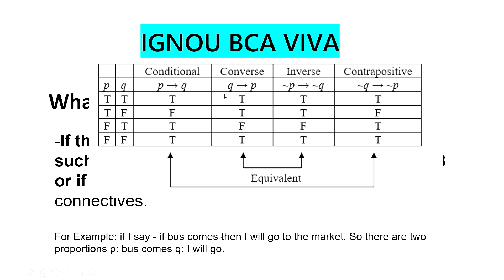Converse is 'if Q then P'. If both are false, the minus-minus becomes positive — the same statement — so the Converse will also be true. Inverse applies negation to both parts and implies. Inverse and Contrapositive will be equivalent.